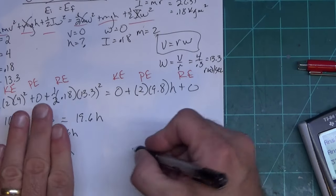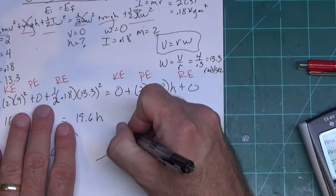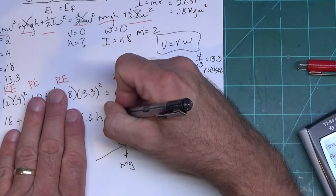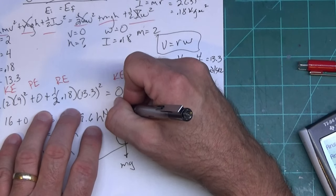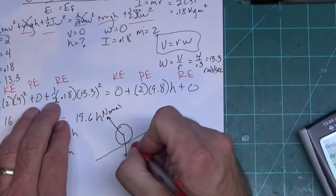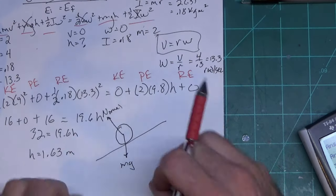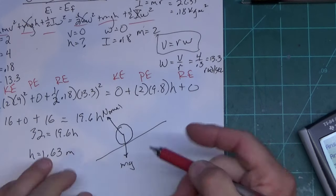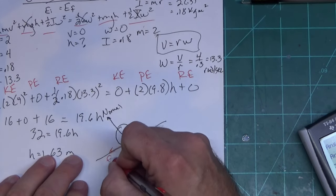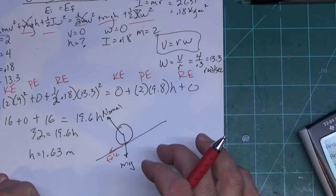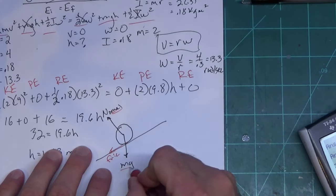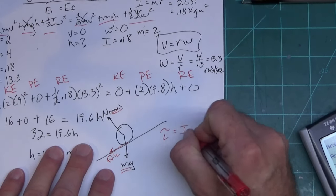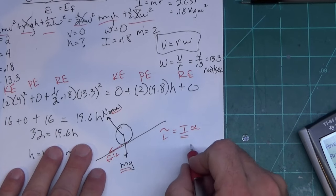For part b, the friction force: looking at the wheel on the incline, the forces are mg downward, normal force perpendicular to the surface, and friction. Using torque is ideal here because the normal force and mg drop out of the torque equation, leaving torque = Iα, which will give us the friction force directly.